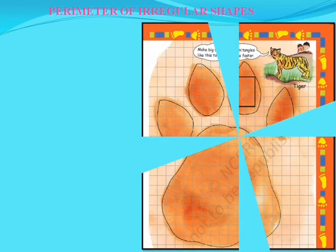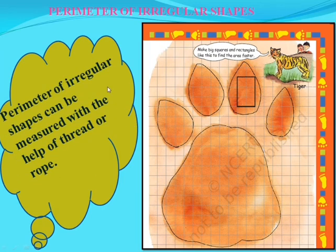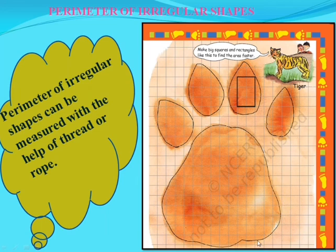Now children, let's find out the perimeter of irregular shapes. This is a picture of a tiger's foot. If we want to find out the perimeter of the foot, perimeter of irregular shapes can be measured with the help of thread or rope. We have to put a rope or thread along the boundary and we can easily calculate the perimeter. In this way, we can find out the perimeter of irregular shapes.